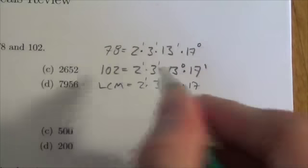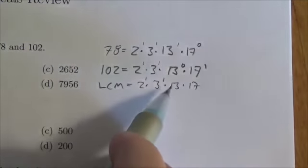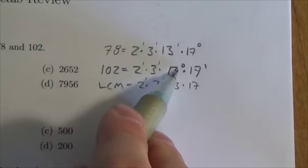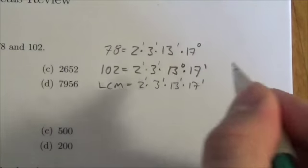Between 2 to the 1 and 2 to the 1, 1 is the largest exponent. For 3 to the 1 and 3 to the 1, 1 is the largest exponent. Between 13 to the 0 and 13 to the 1, 13 to the 1 is the largest exponent, and the same for 17.